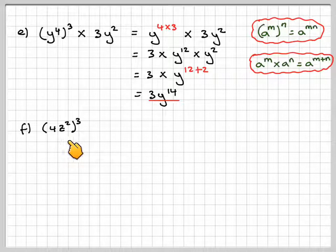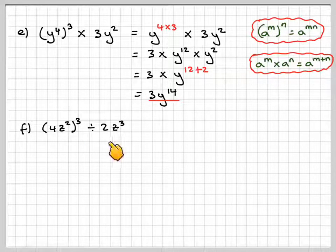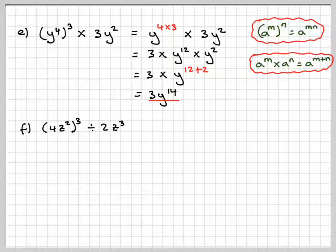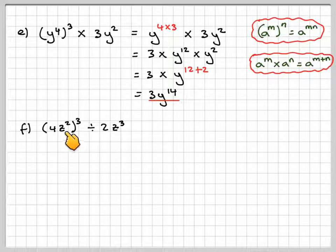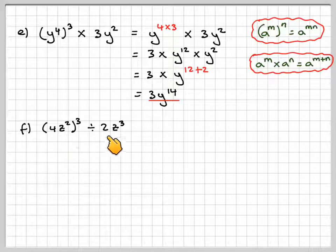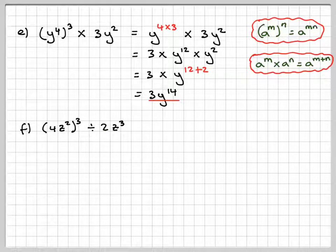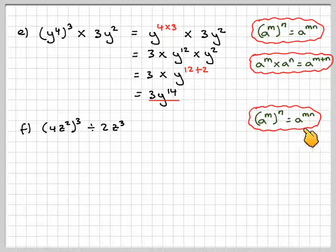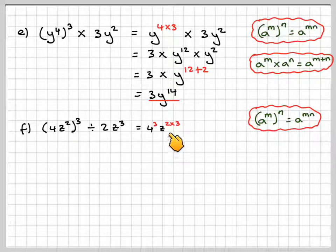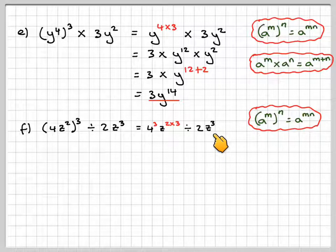F, 4z squared cubed divided by 2z cubed. Now in algebra, because the 2 and the z can look fairly similar, it's a good idea to put a line through your z's. That's just something I've learnt from a very long time ago, and therefore you don't confuse the 2 and the z together. Right, what does this mean here? Well, we're going to apply this rule. a to the m n is a to the m n. So we have to apply it to the 4 and the z squared. So it becomes 4 cubed, z to the 2 times 3 divided by 2 times z cubed.